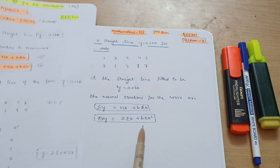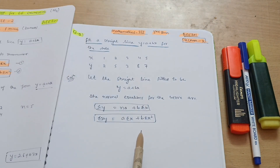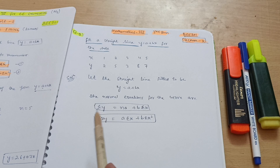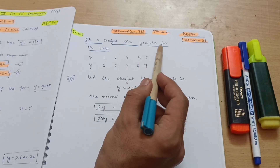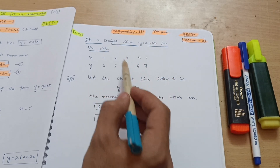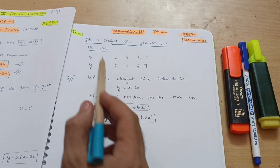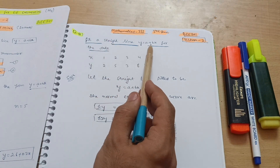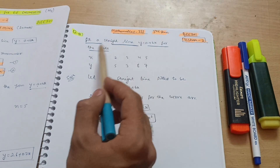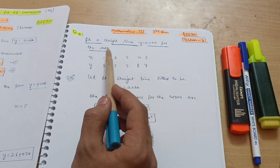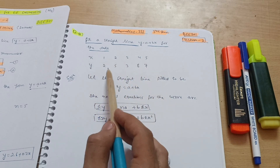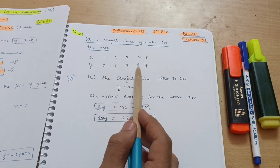In this video, we will solve another problem so that you will get a clear picture about the straight line. The question is: fit a straight line y = a + bx for the given data, where x is equal to 1, 2, 3, 4, 5 and y is equal to 2, 5, 3, 8, 7.